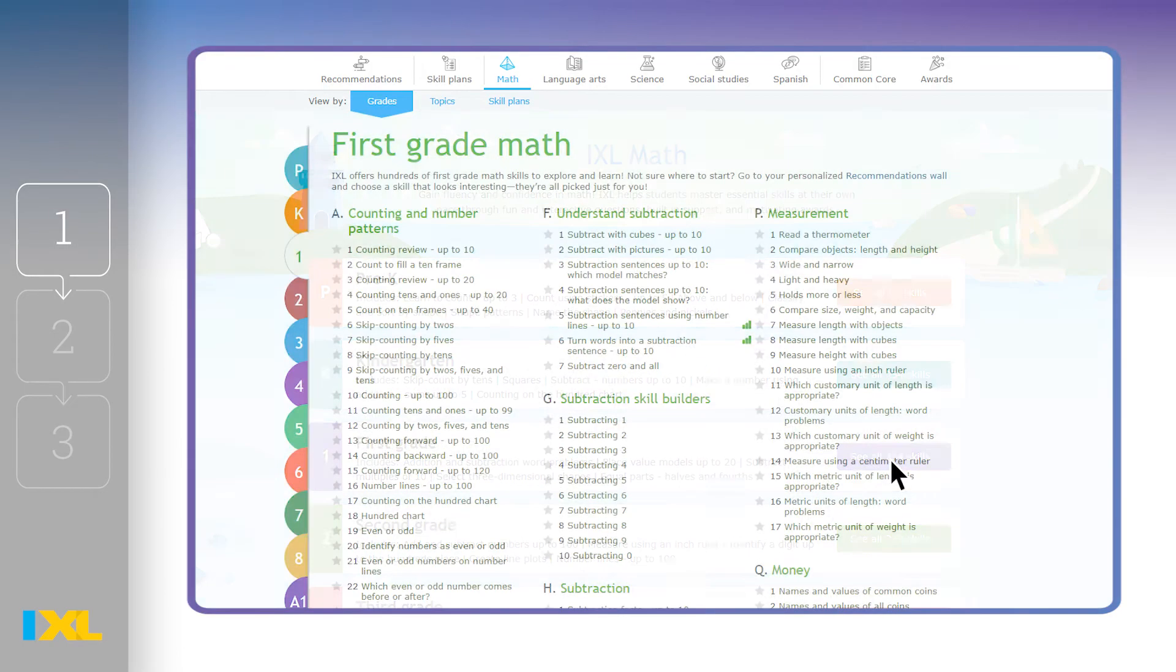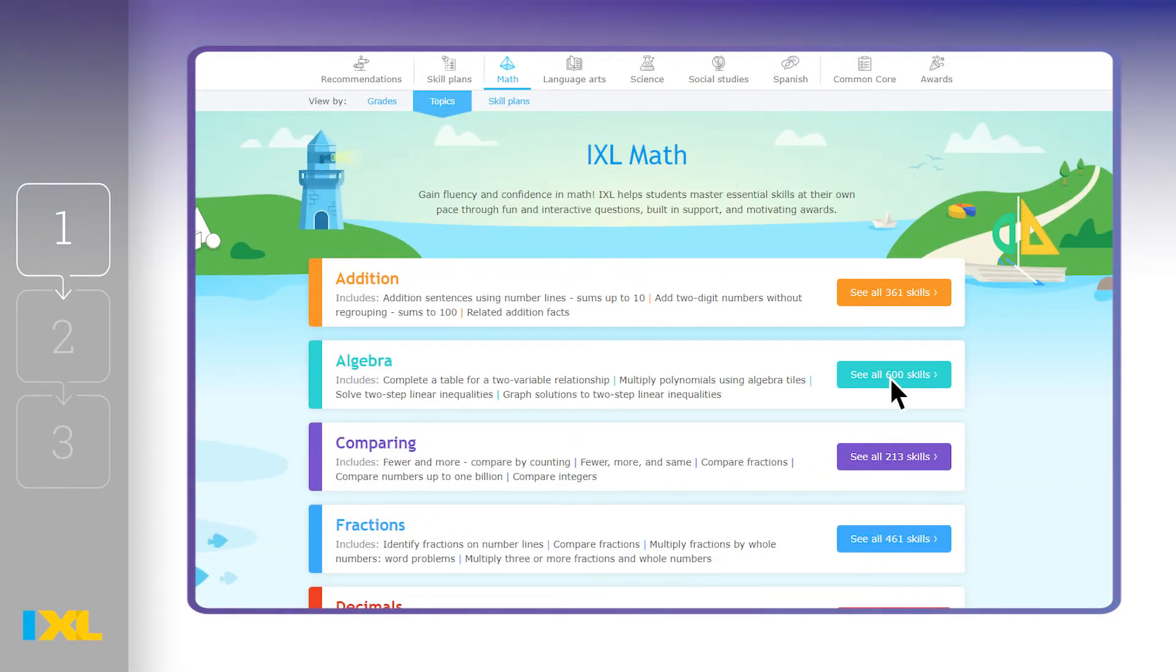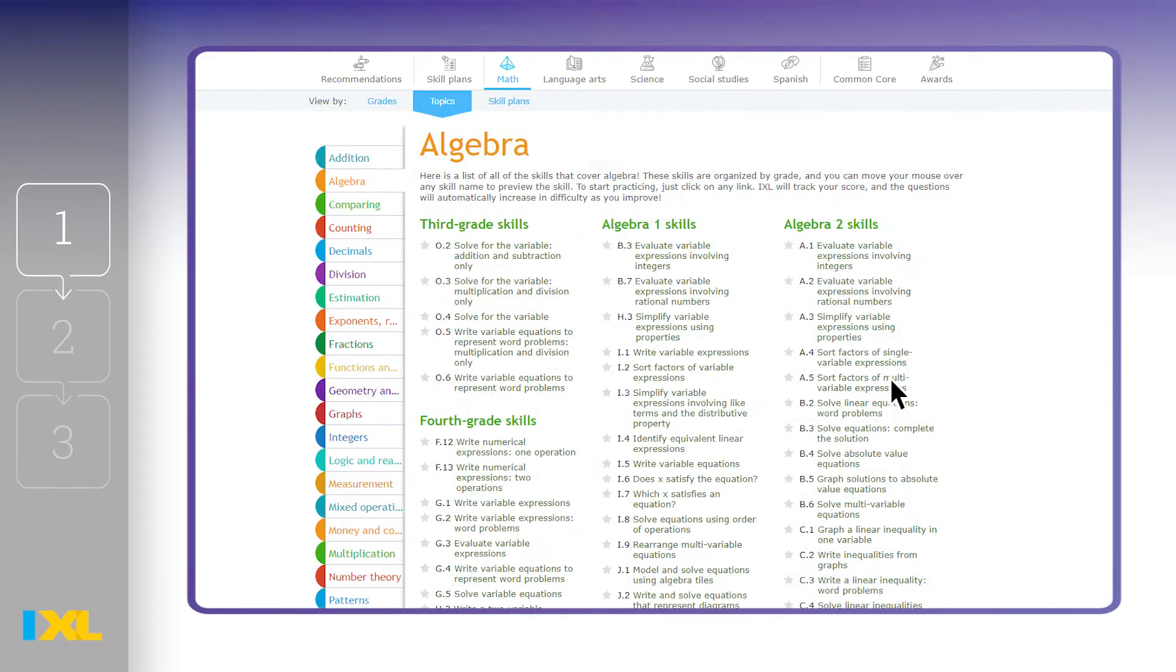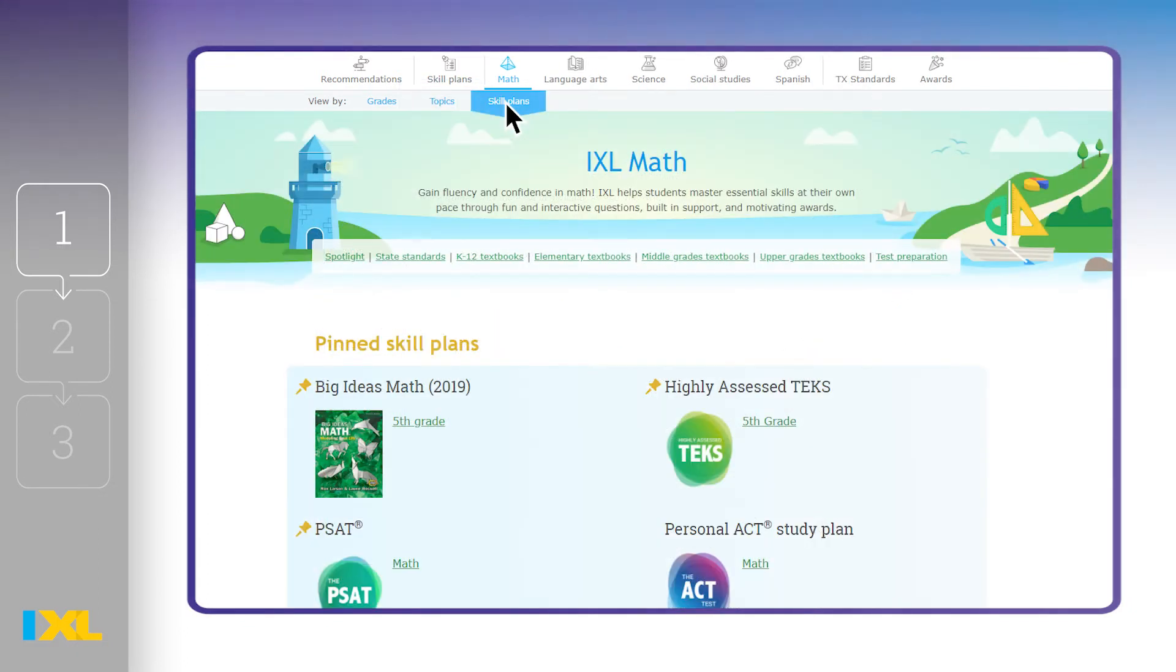You might use the grades view, which gives you every skill for an entire grade level. Or you could use the topics view, which shows you every skill in a particular topic, such as fractions or word problems, across all grade levels. You can also use the skill plan for your textbook to find skills that are perfectly matched to your lesson.